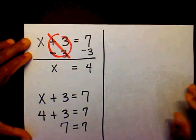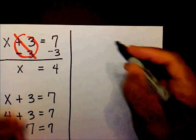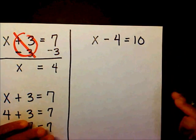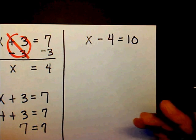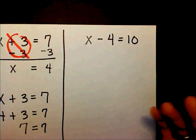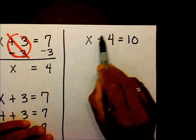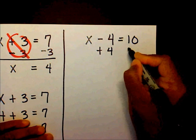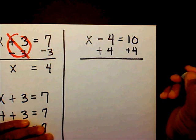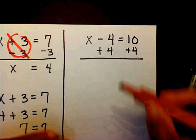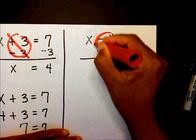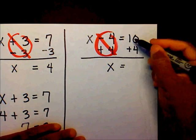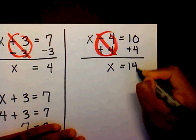The second basic equation is x minus 4 equals 10. The purpose of solving the equation is to isolate the x. I need to move this minus 4. To move this minus 4, I have to add 4 to both sides. That created a zero pair. Negative 4 plus 4 equals 0. So that's going to leave me with x on the left and 10 plus 4 is 14 on the right.